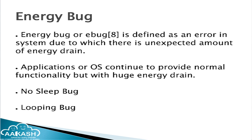An energy bug is defined as an error in the system where the application and operating system behave normally functionally, but there is an unexpected and huge energy drain that the end user cannot figure out. Energy bugs are categorized into two types: the no-sleep bug and the looping bug. In a no-sleep bug, you acquire a wake lock in some part of the code but forget to release it, or an unexpected exception prevents the release code from executing.